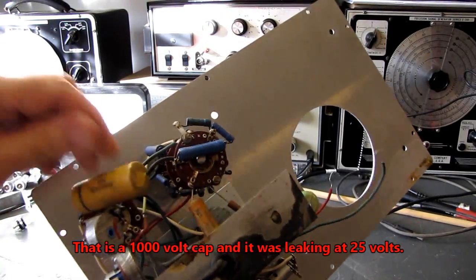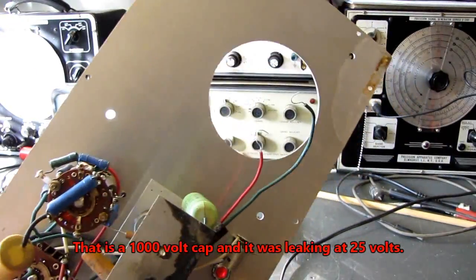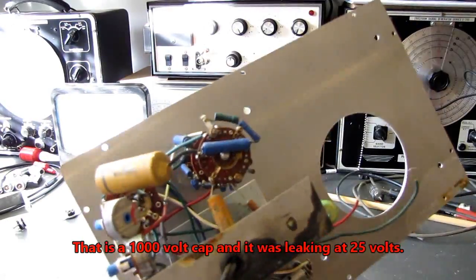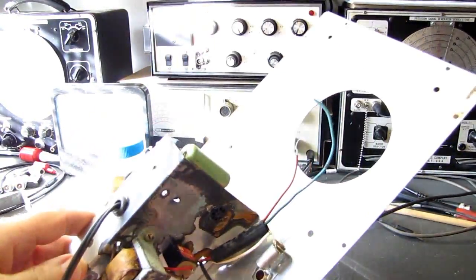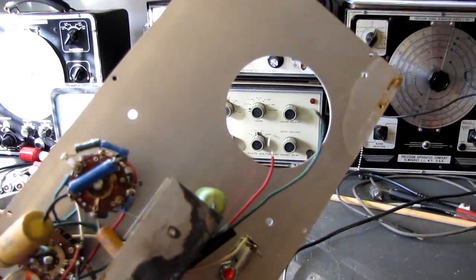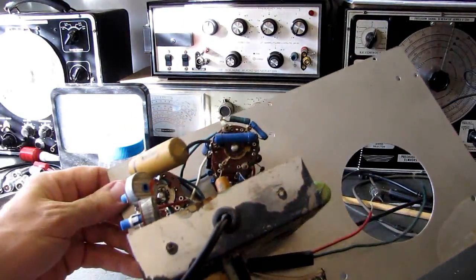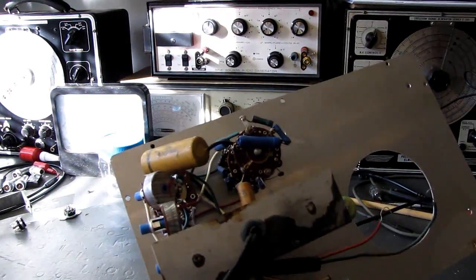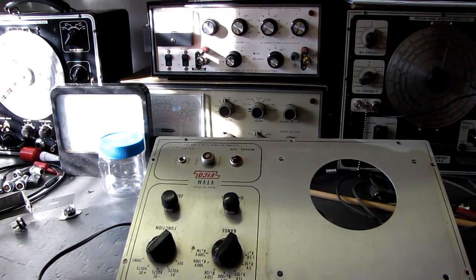We'll replace these waxy caps and get everything all back together. I've got five capacitors there to change. There's an electrolytic down in there for the filter cap. So we'll get all this changed up. Check all the resistors for tolerance. If anything's out of tolerance, we will replace it with a new metal film resistor.